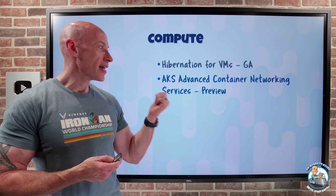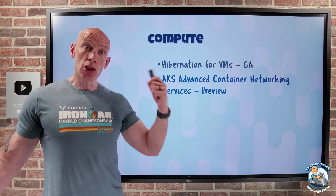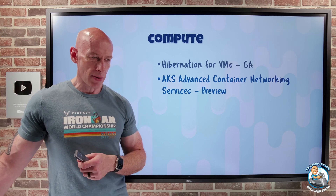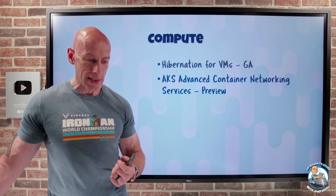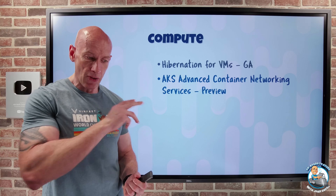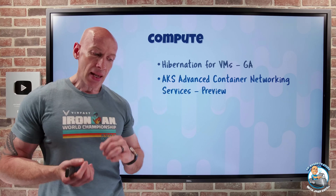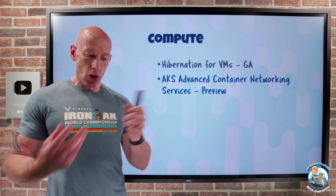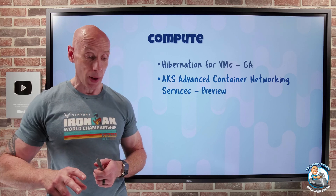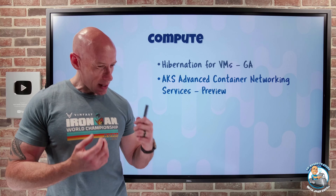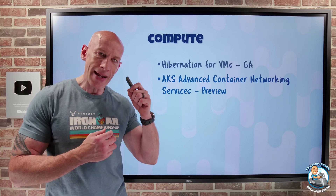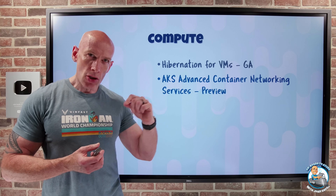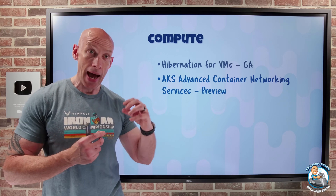AKS Advanced Container Networking Services is available in preview. This is going to be a suite of services that sit on top of existing network solutions, aimed to address various complex scenarios around observability, security, and compliance. This is only available for Kubernetes 1.29 and above clusters. The first feature they're releasing is Advanced Network Observability in preview, which works for both Cilium and non-Cilium Linux data planes. It's built on the Hubble control plane — think the Hubble metrics, the Hubble CLI, the Hubble UI — as a managed solution on AKS clusters.